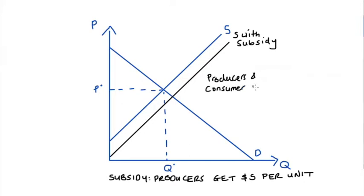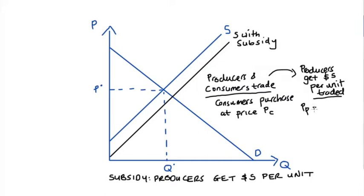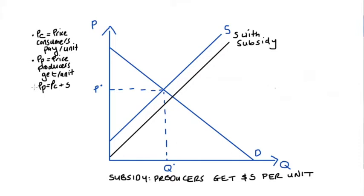Consumers pay a price per unit to the producers — let's call that pc, the consumer's price. The producers then get an additional s dollars per unit from the government, so the total price that producers receive — let's call that pp, the producer's price — is equal to the price received from the customer plus the amount of the subsidy.